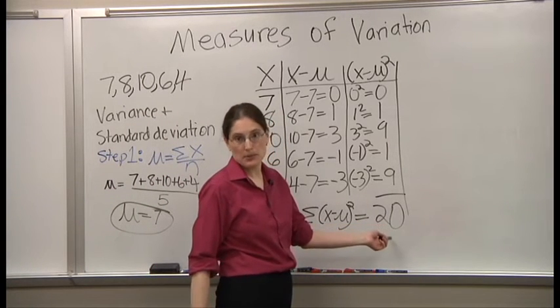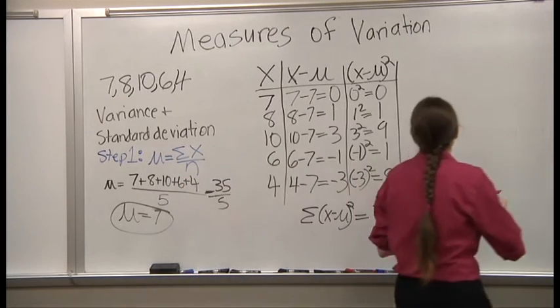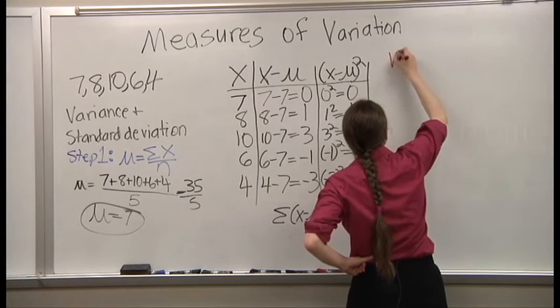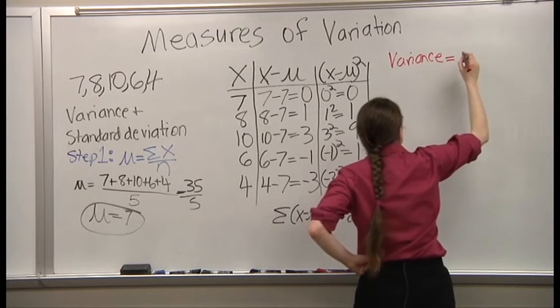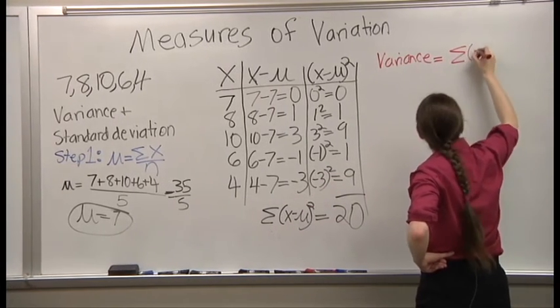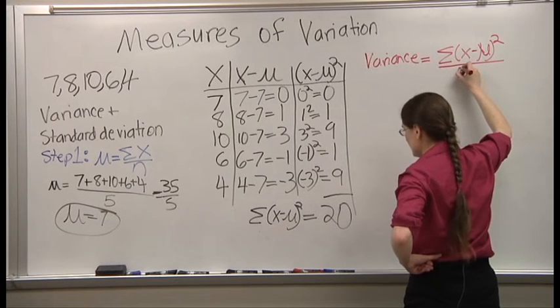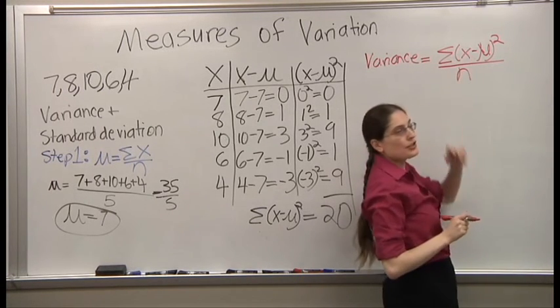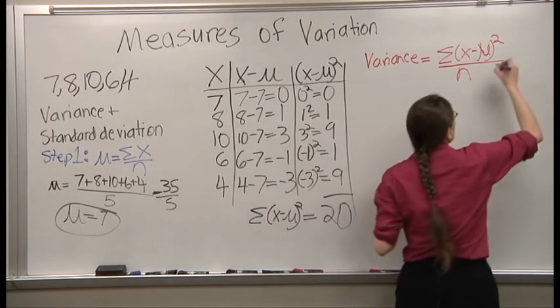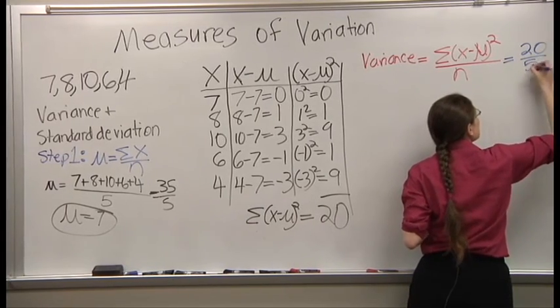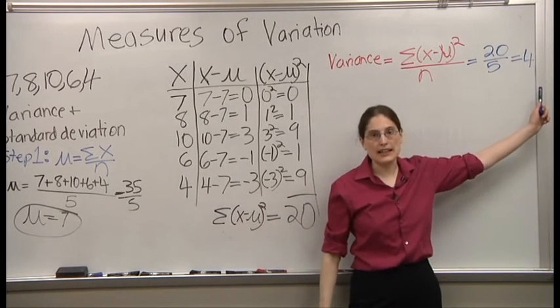You take the sum and you stick it in the formula. You just divide it by the number of values. So, the variance of this data is four.